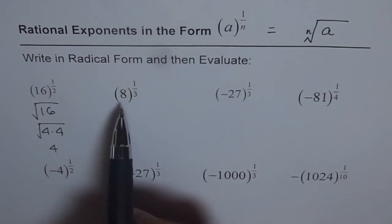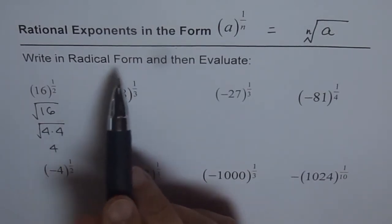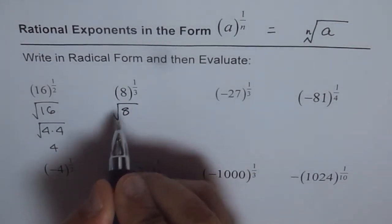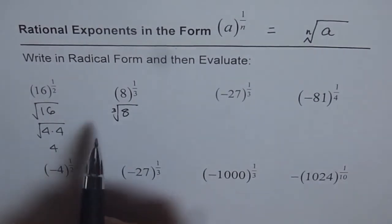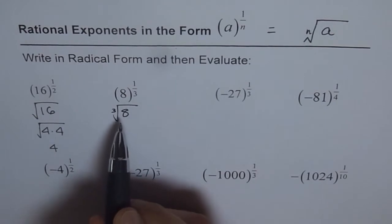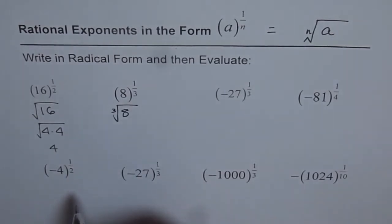Now, let's go to the next problem, which is 8 to the power of 1 over 3. In radical form, I could write this with the 3 very small and close to the square root symbol. That is how we write 8 to the power of 1 over 3 in radical form.